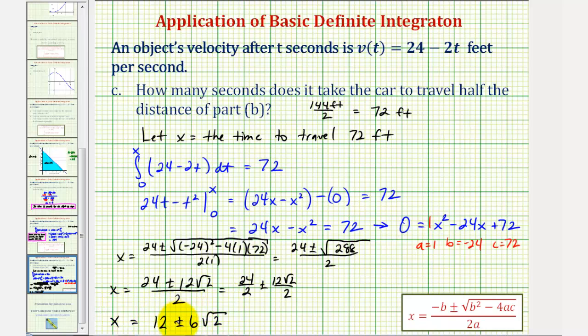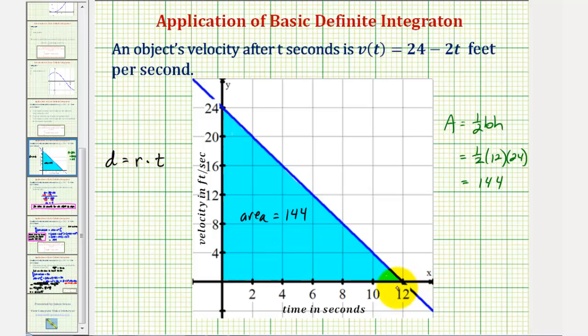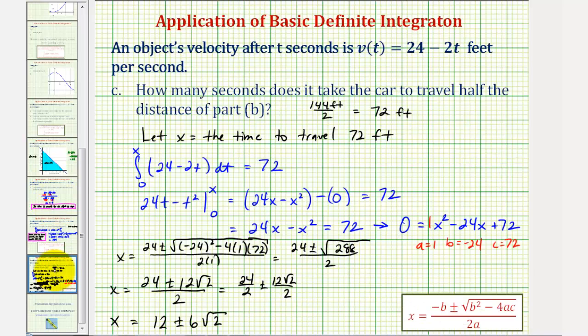So it may appear there are two solutions for x, which is the time it takes to travel 72 feet. But remember, after t = 12 seconds, the object has stopped. And therefore, 12 + 6√2 would not make any sense. So the exact time would be 12 - 6√2.